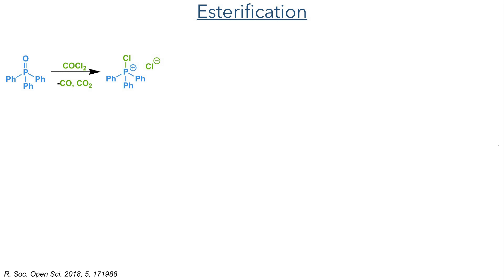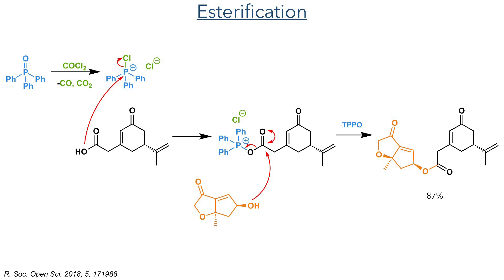The triphenylphosphine oxide first reacts with oxalyl chloride, forming an electrophilic chlorophosphonium salt that is first attacked by the acid. This activates the acid, making it more electrophilic, and the secondary alcohol can then attack, forming the ester in an 87% yield upon the elimination of triphenylphosphine oxide.